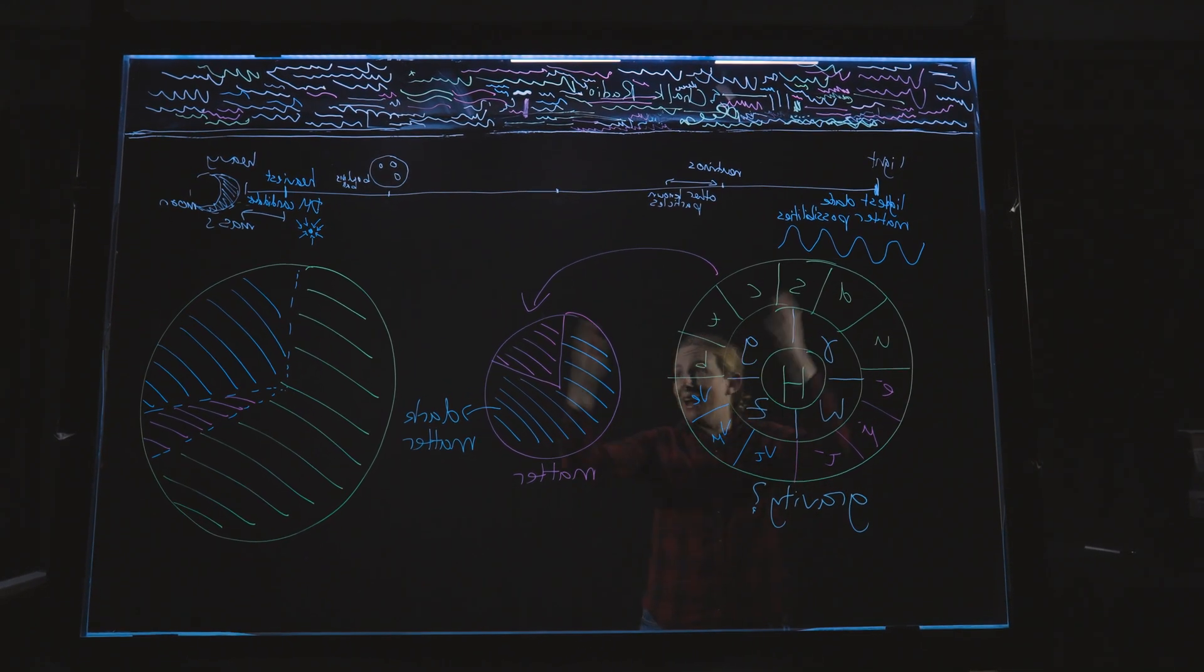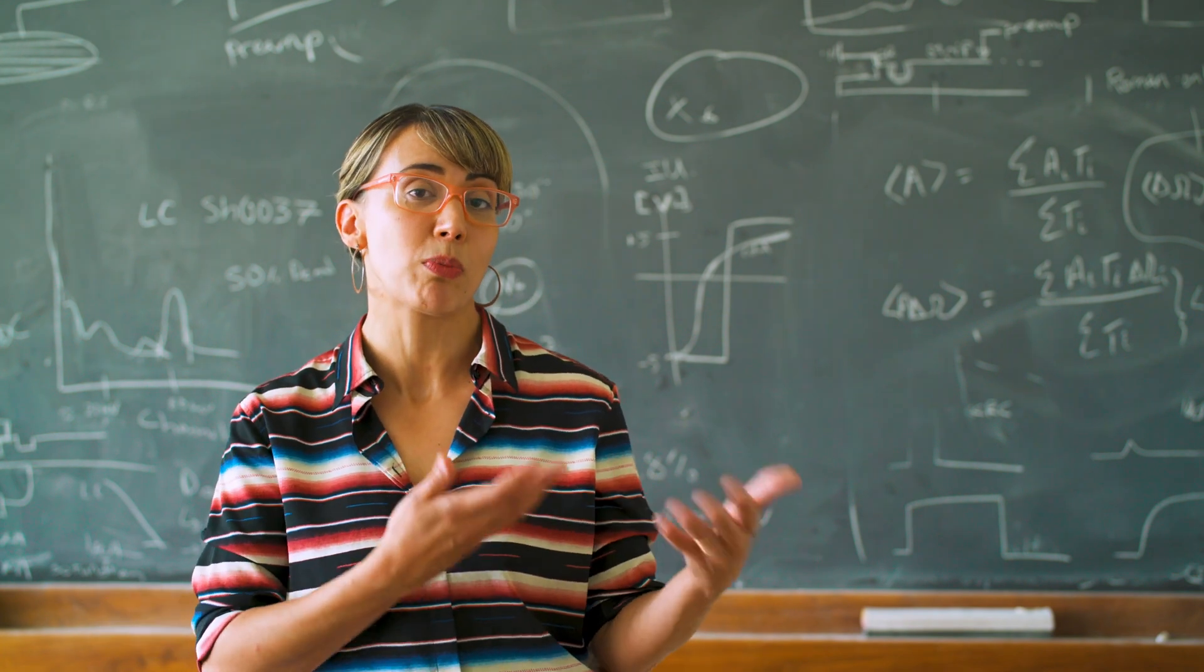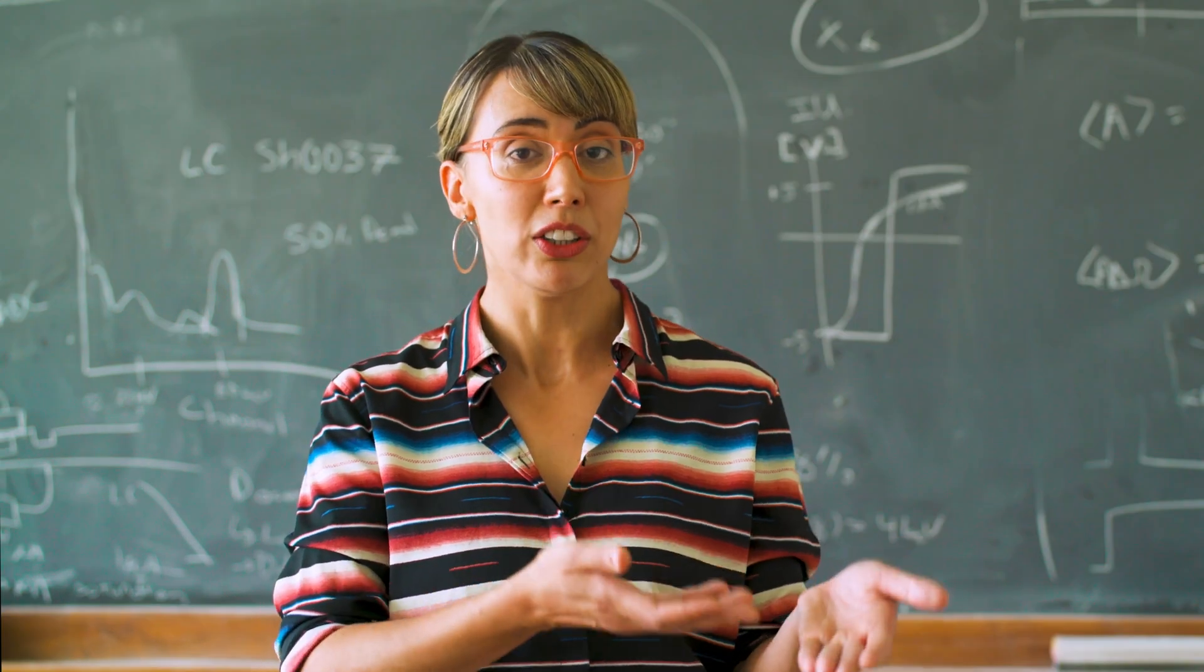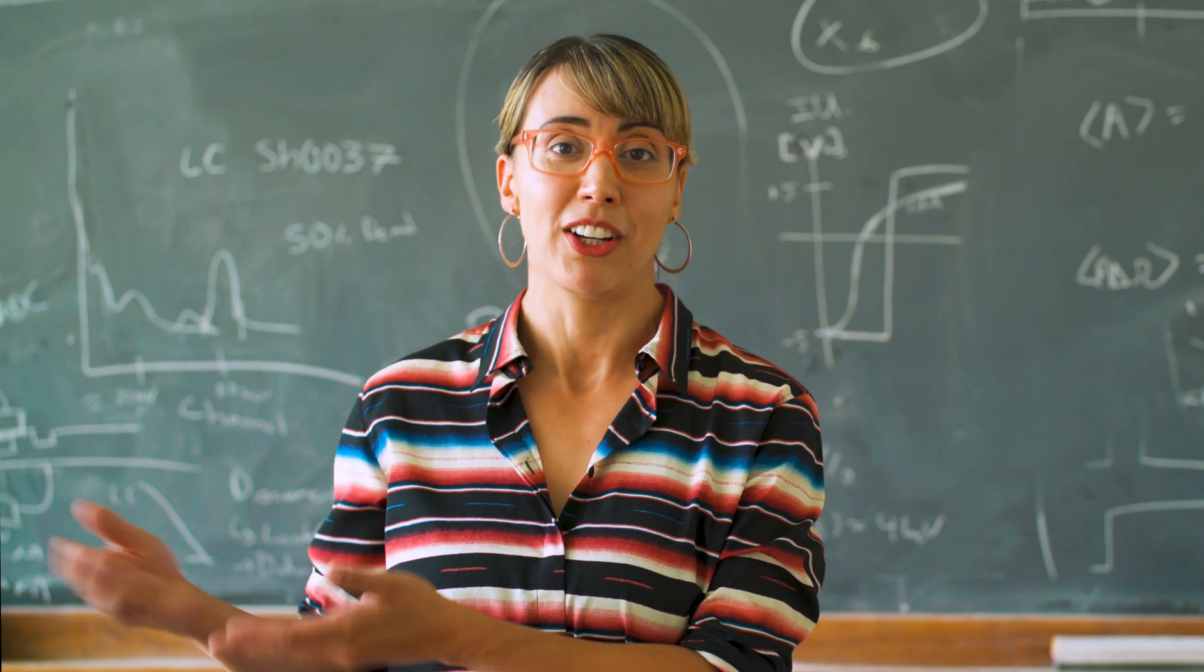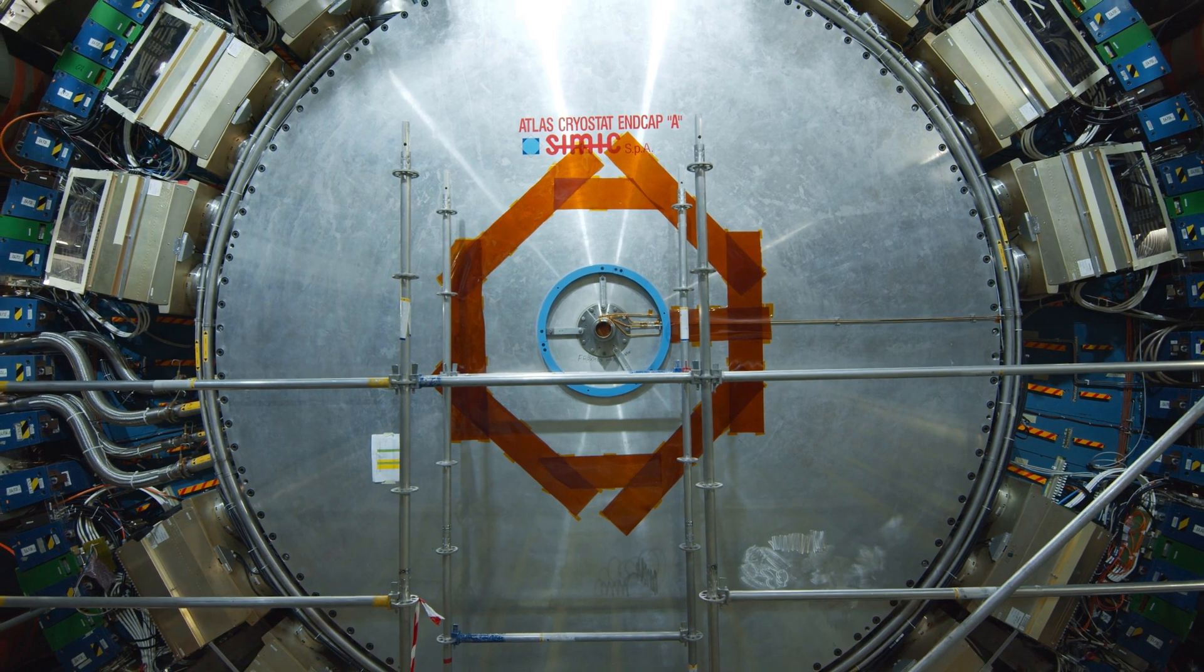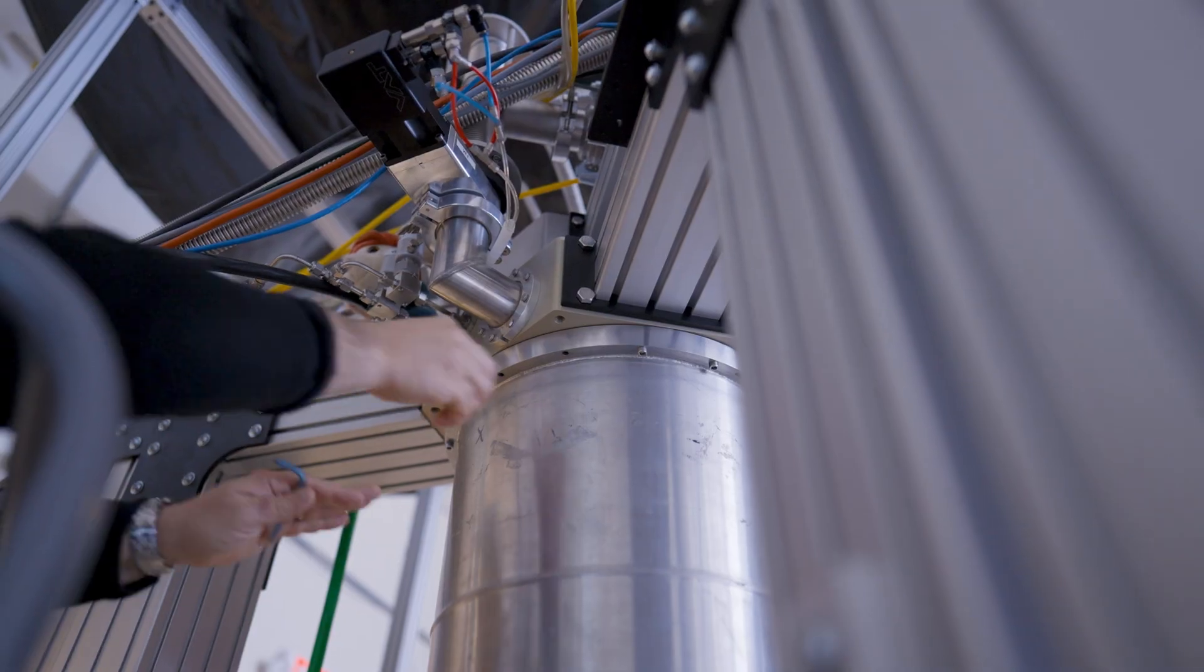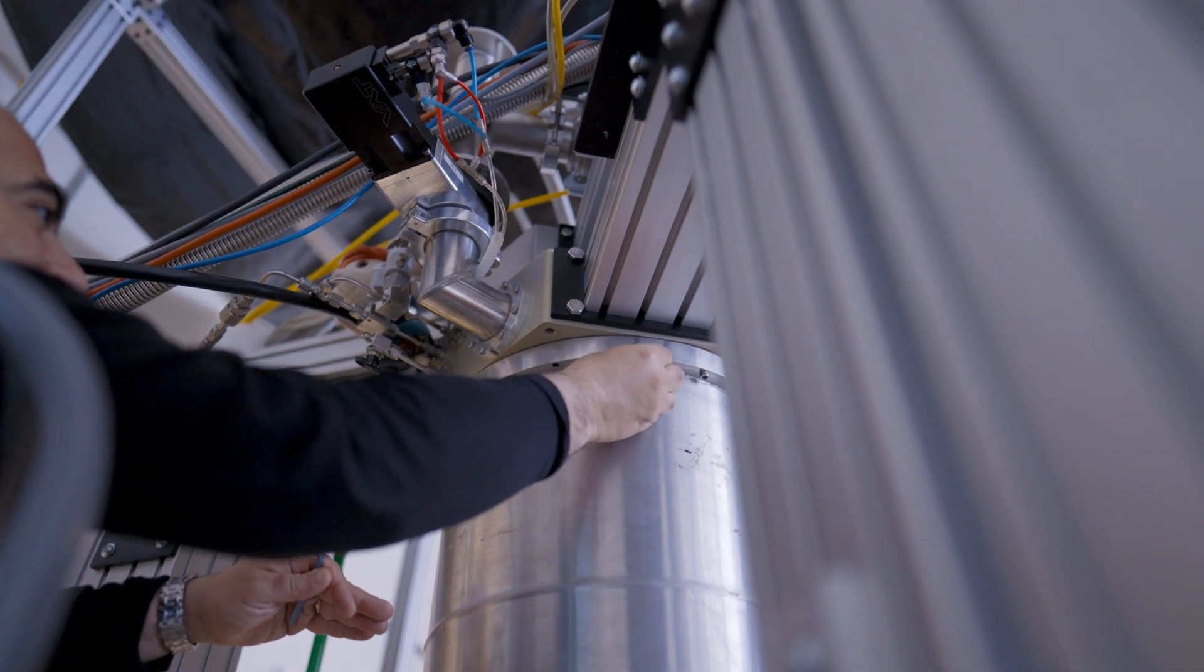And then they come to us, the experimentalists, and they say, well, we have this great idea. This is how we could fix all these problems in the standard model. And look, it predicts this new kind of matter. Could you guys go out and look for it? So in essence, what we are all doing is we are building giant detectors and we are looking for something new and unexpected to happen within those detectors.